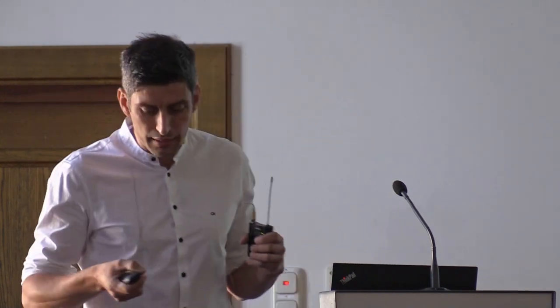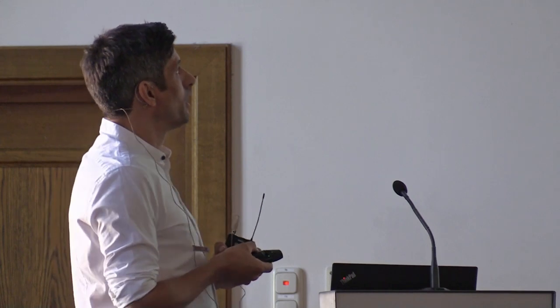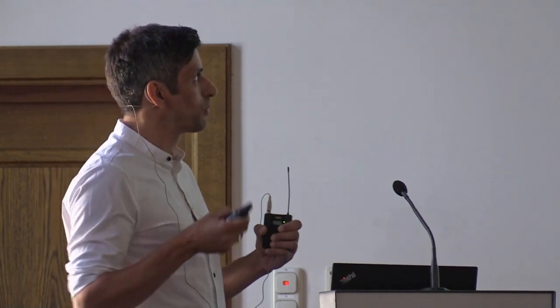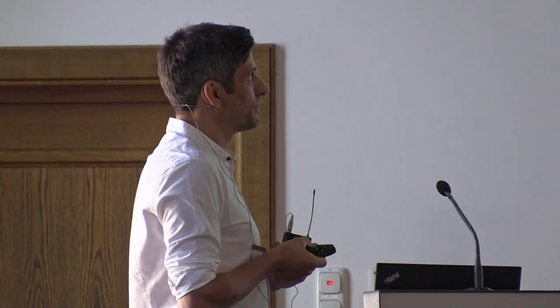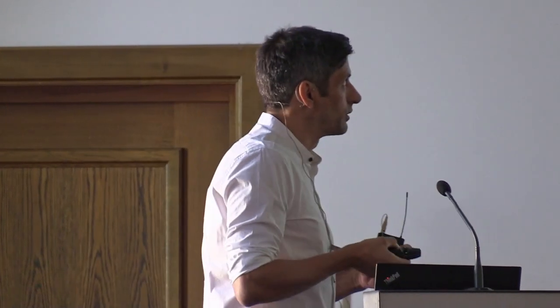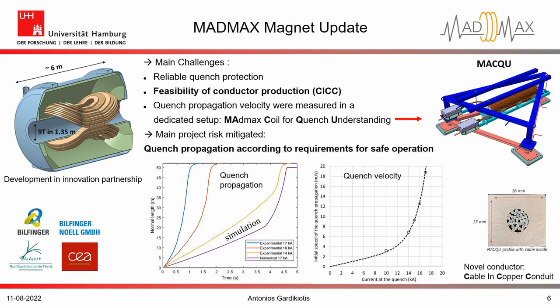About the magnet, we faced major challenges that we have already addressed. One was the reliable quench protection strategy, and the second was the feasibility of conductor production. We implemented the MadMax test coil for quench understanding — the McQ test coil — and the main project risk has been mitigated. We now have quench propagation velocity according to the requirements for safe operation of MadMax, which is very important for us.